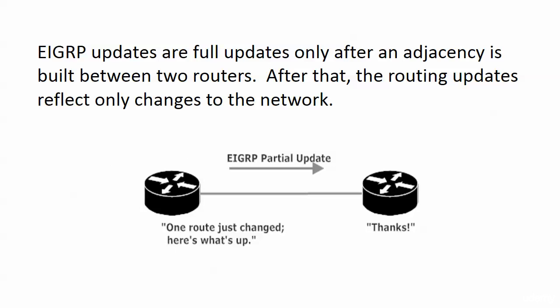EIGRP is a big step forward. It's known as a hybrid — it has some link state characteristics and some distance vector characteristics. An EIGRP update is a full routing update only after an adjacency is built between two routers. An adjacency is an agreement on certain rules between two routers forming a neighbor relationship. EIGRP sends a full update right after that adjacency is built, which makes perfect sense, but after that the routing updates reflect only changes to the network and are only sent when there is a change.